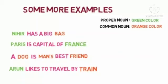In 'A dog is man's best friend,' none of these words are given a particular name, so they are common nouns. 'Arun likes to travel by train' — Arun is a proper noun as it names a specific person, while train is a common noun because no specific train name is mentioned. If we said 'Indian Express,' that would be a proper noun.